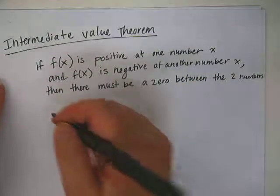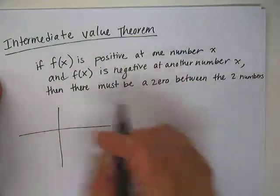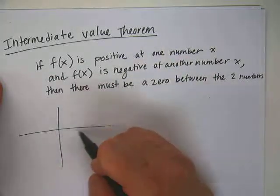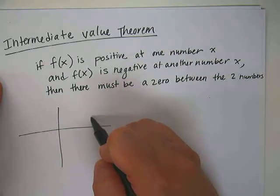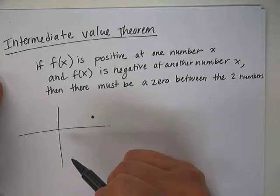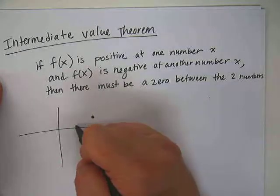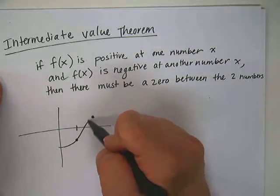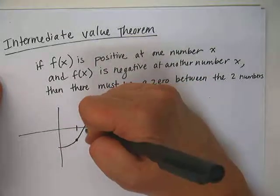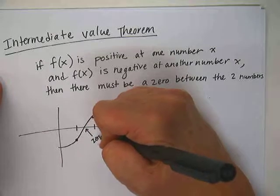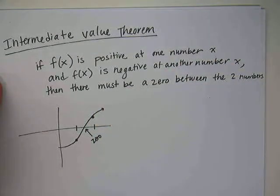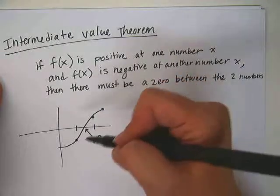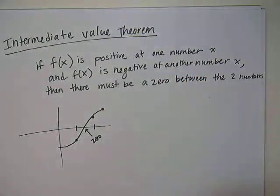Why is that true? Well, let's visualize it on a graph. Remember, f of x means y. So if we have a number x, and the y value is positive one place, and then we have a different number x, and the y value is negative, that means that somewhere between those two points, there has to be a 0 where the graph crosses the x-axis to get from negative to positive or from positive to negative.